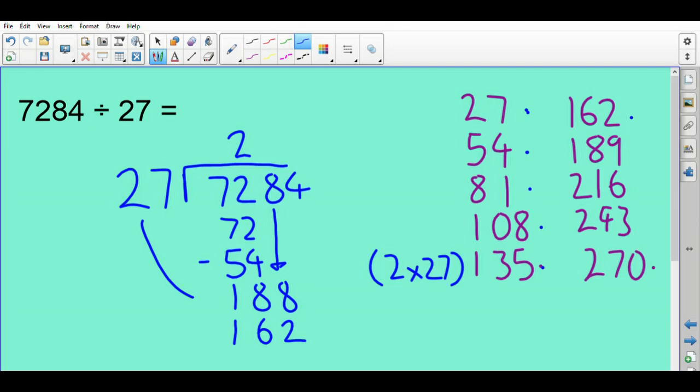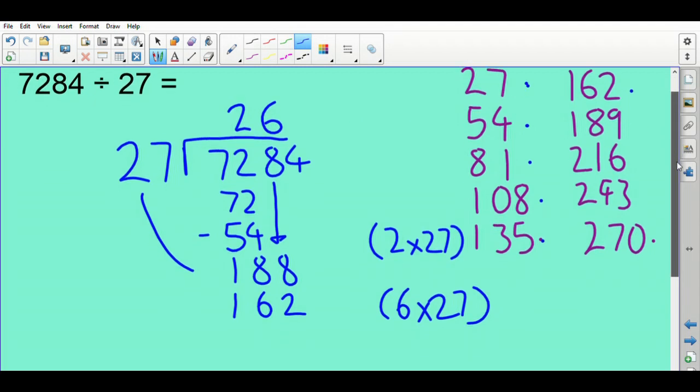There, and I'm going to just write six times 27 there, put my six in here. Now I need to do that subtraction. I'll just scroll the screen down ever so slightly so I can fill it all in. So 188 take away 162 is 26. So now I can bring this four down like so.